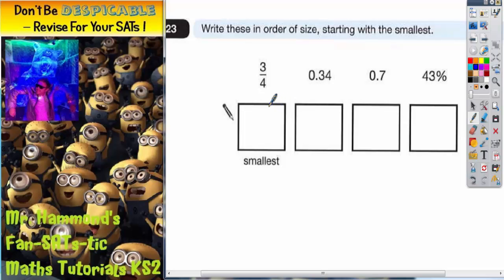I recommend not turning them into fractions. It is possible to do, but that will be the hardest way because if you end up with four different fractions, they could all have different denominators. For example, 43 percent would be 43 out of 100, 0.7 is 7 tenths, 0.34 is 34 out of 100, and this is three quarters. That's not very easy because they've all got different denominators, so don't turn them all into fractions.